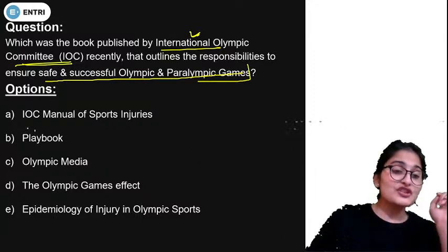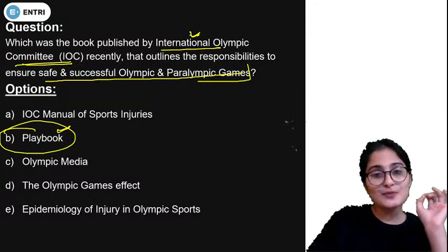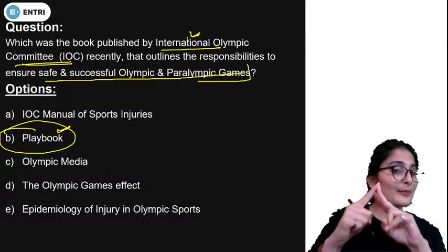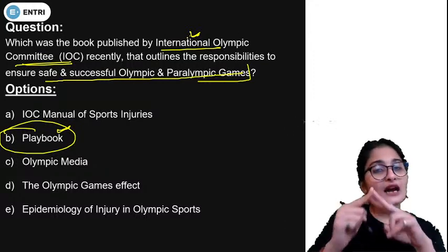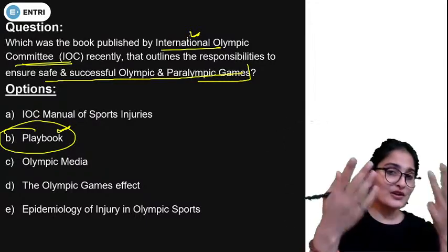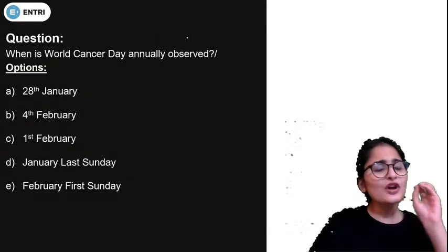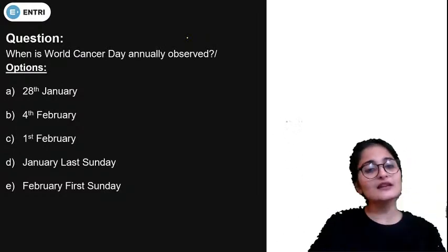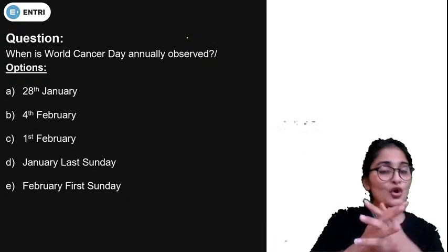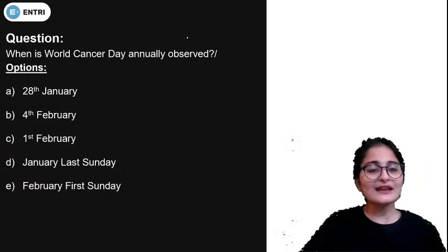The answer is Playbook. Playbook is the name of the book published by the International Olympic Committee. It is about conducting Olympic and Paralympic Games successfully and safely. The possible exam question could be asking for the name of the book given the description, or asking who published the Playbook.